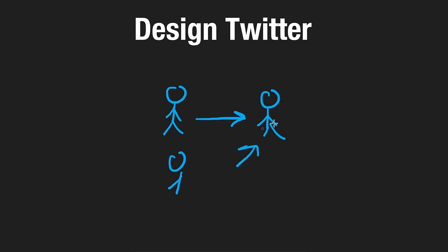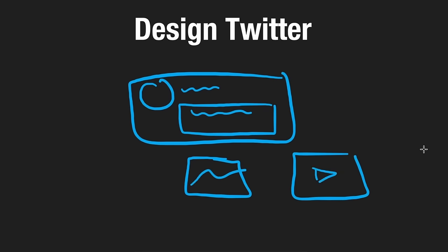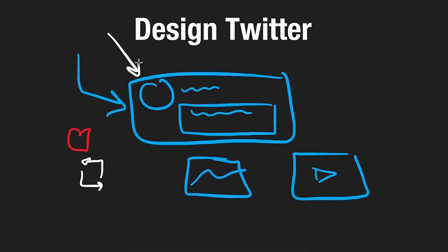On Twitter, the whole point is that people can create tweets. On a particular tweet, you have a person's profile picture and username, and then the actual content — it can have some text, some images, and a video. There's a lot of things you can do to interact with a tweet: you can like it, retweet it, follow or unfollow the person who made it, and recently you can even edit tweets. This is just to give you a general idea of what functionality you might want to clarify with your interviewer.